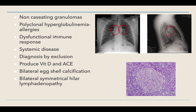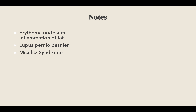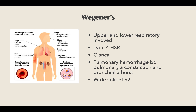Polyclonal hypergammaglobulinemia is caused by a dysfunctional immune response; it is a systemic disease diagnosed by exclusion. These patients have elevated vitamin D production and ACE production. There is bilateral eggshell calcification of lymph nodes and bilateral symmetrical hilar lymphadenopathy. Wegener's granulomatosis is a type 4 hypersensitivity reaction — c-ANCA is the marker. It can cause pulmonary hemorrhage due to pulmonary artery constriction and bronchial artery rupture, and it involves both upper and lower respiratory systems.